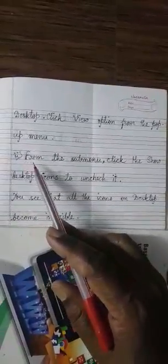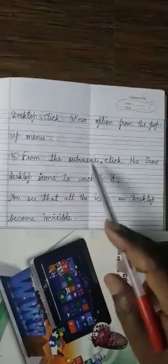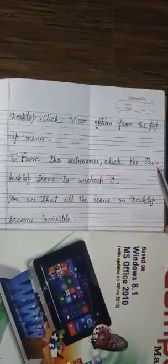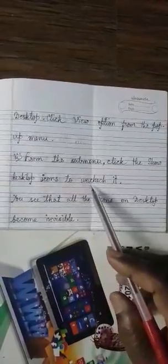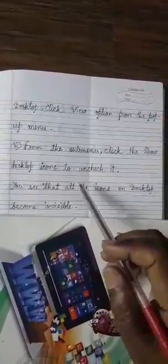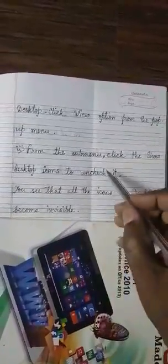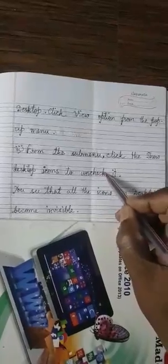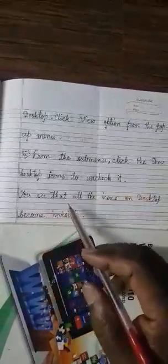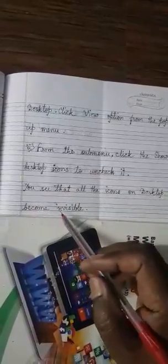Step 2: From the sub-menu, click the Show Desktop icons to uncheck it. You see that all the icons on the desktop become invisible.